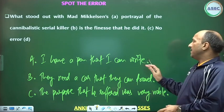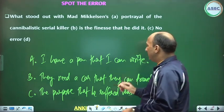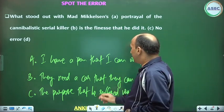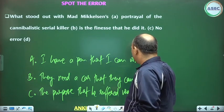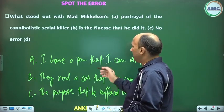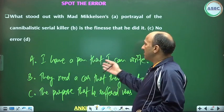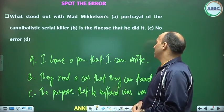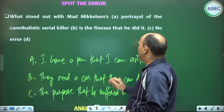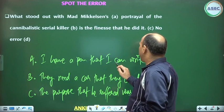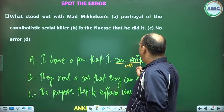I have a pen that I can write. If you look at 'that I can write', this is a relative clause. Pen is described by this relative clause. The relative clause contains a relative pronoun. I have a subject.